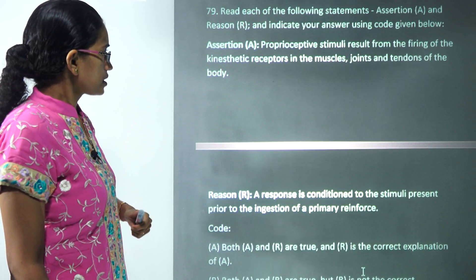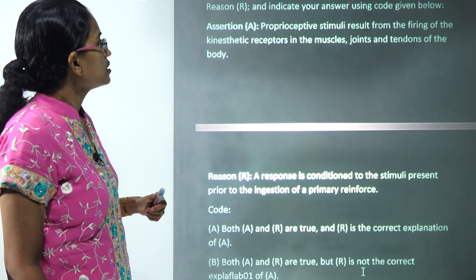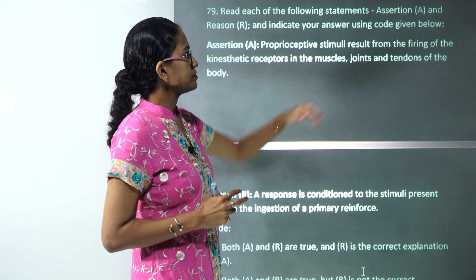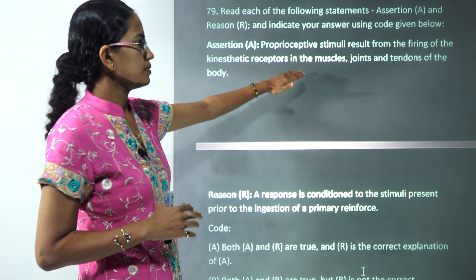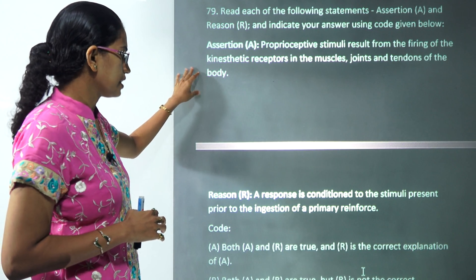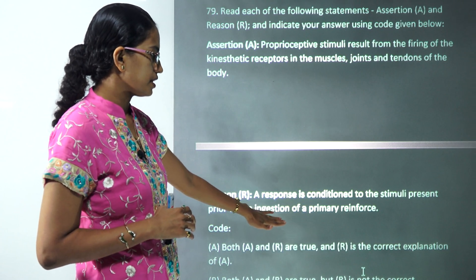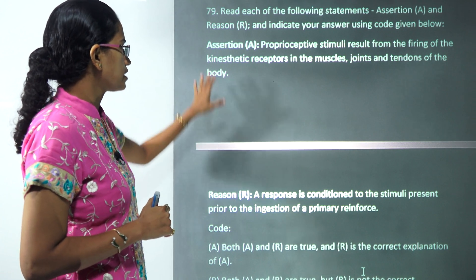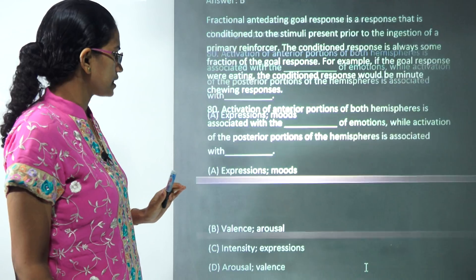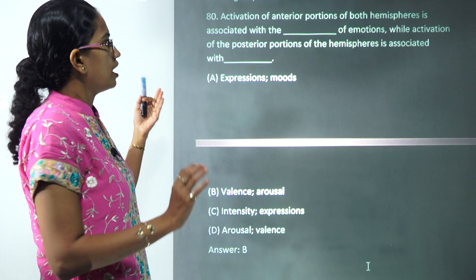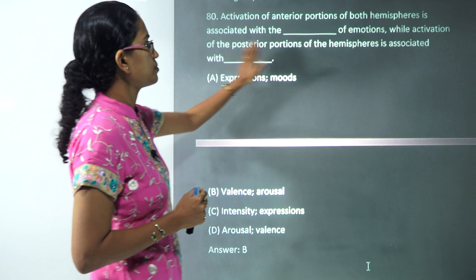The next assertion-reason question states that proprioceptive stimuli result from firing of the kinesthetic receptors in the muscles, joints, and tendons — that's correct. A response is conditioned to the stimuli present prior to the ingestion of a primary reinforcer — that's also correct. Both statements are independently correct.